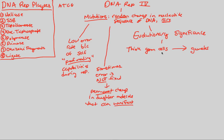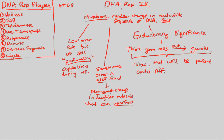Germ cells start as very immature sperm and egg and eventually mature into fully mature gametes. But sometimes during this maturation process, you can have a mutation. If a mutation occurs during maturation from germ cell to gametes, it is evolutionarily significant — because with a mutation in the gametes, that mutation will be passed on to offspring via inheritance, something Mendel and Thomas Hunt Morgan observed.